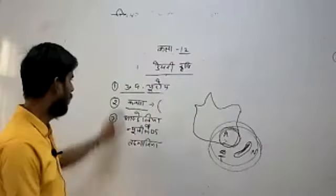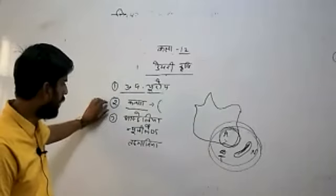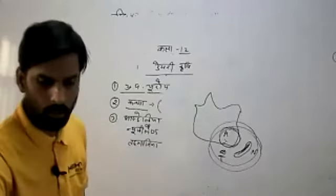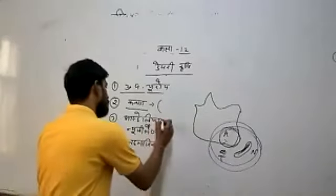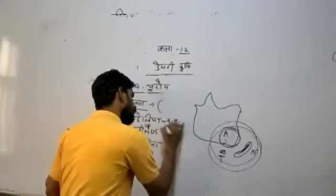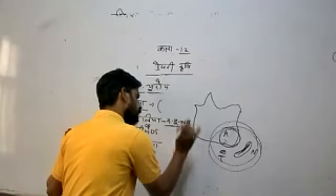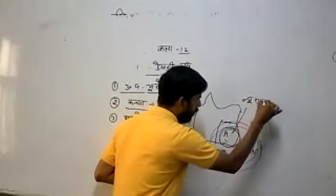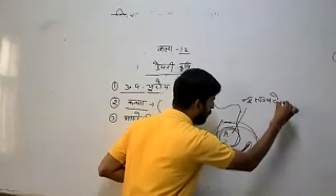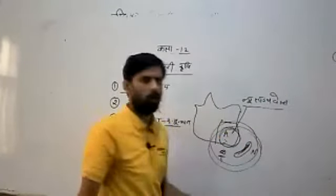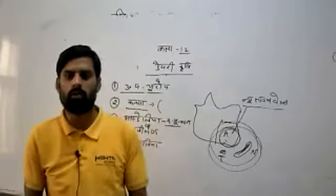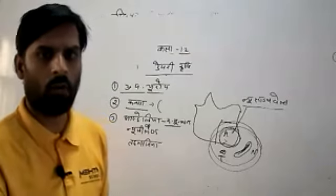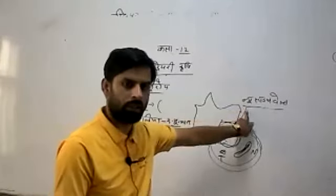The first is Europe, the second is Canada, and the third is Australia. Which is Australia? Dakshnipurvibhag. Australia is the Dakshnipurvibhag. This is the name of the New South Wales. If Australia is the most important part of the New South Wales, that is the most important part of Australia.